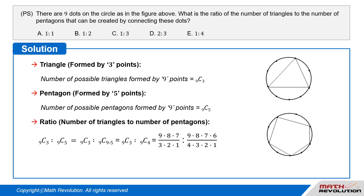The ratio of the number of triangles to the number of pentagons is 9 choose 3 to 9 choose 5, which is equal to 9 choose 3 to 9 choose (9 minus 5), which is equal to 9 choose 3 to 9 choose 4. This gives us (9 times 8 times 7) over (3 times 2 times 1) to (9 times 8 times 7 times 6) over (4 times 3 times 2 times 1). The calculation is easier for 9 choose 4 than 9 choose 5.